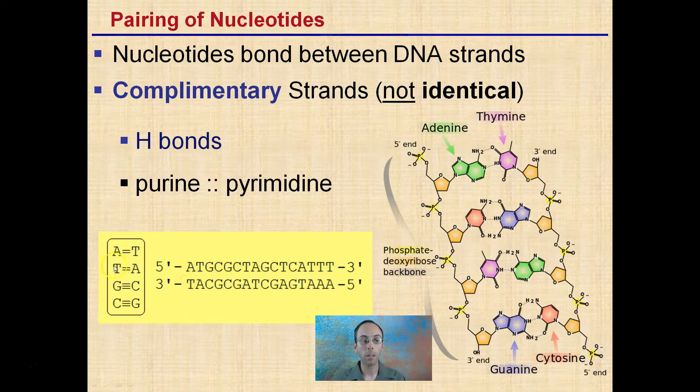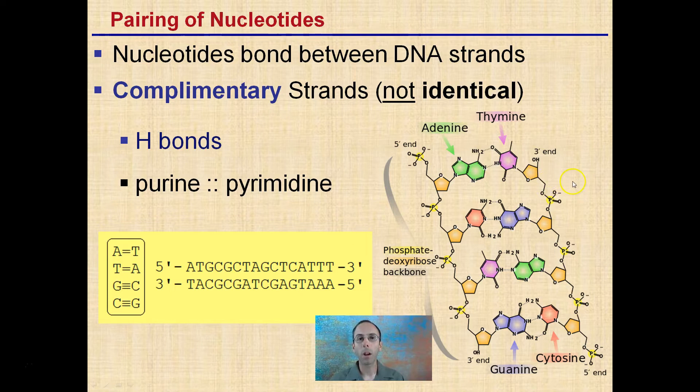A binds with T. T binds with A. G binds with C. And C binds with G. These are complementary, not identical strands. When we look down one side of the DNA, adenine, A binds with T, there's going to be a complementary thymine on the other side. Same thing here. When we see a guanine, there's going to be a complementary cytosine on the other side when we're looking at particular DNA because we see thymine here. Hopefully that helps describe some monomeric units for nucleic acids.